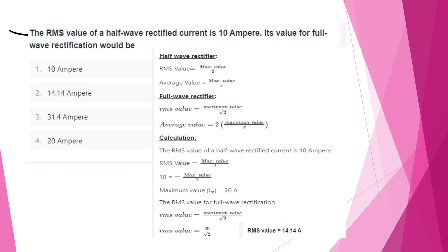Next question: the RMS value of a half-wave rectified current is 10A. Its value for full-wave rectification would be? For half-wave: RMS = Im/2, average = Im/π. For full-wave: RMS = Im/√2, average = 2Im/π.